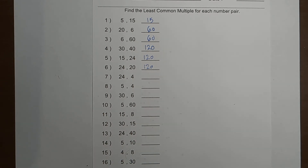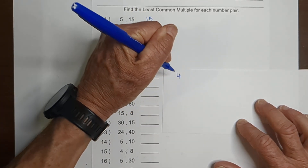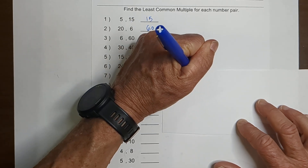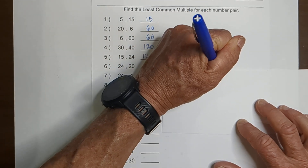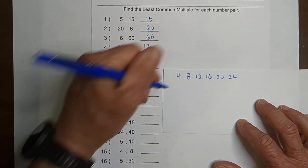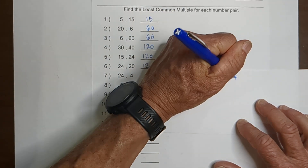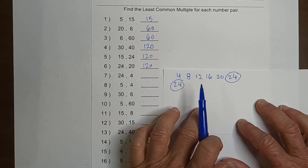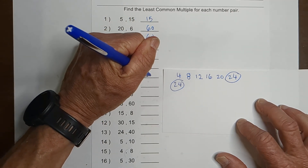Up next I'm going to use factors, but I'm going to start with the smaller number — 4: 4, 8, 12, 16, 20, 24. And here's why — we have a factor right there. It may be to your advantage to start with the smaller number. So for this problem, the least common multiple is 24.